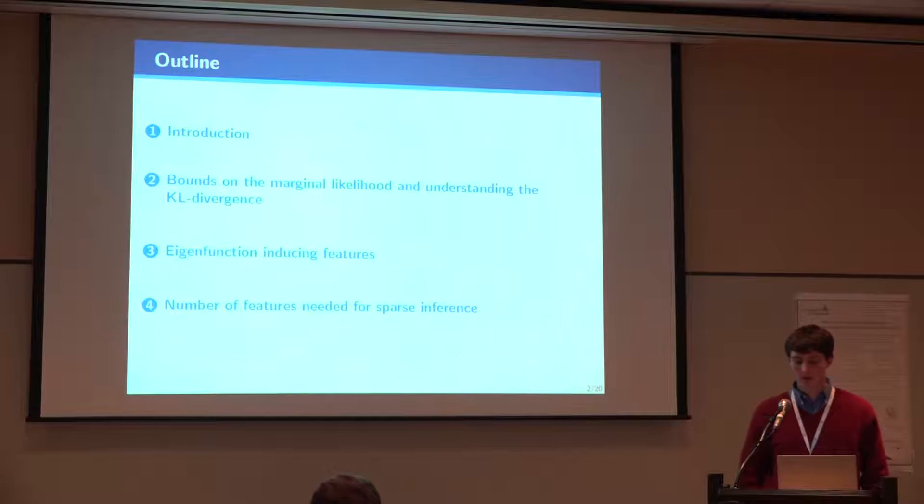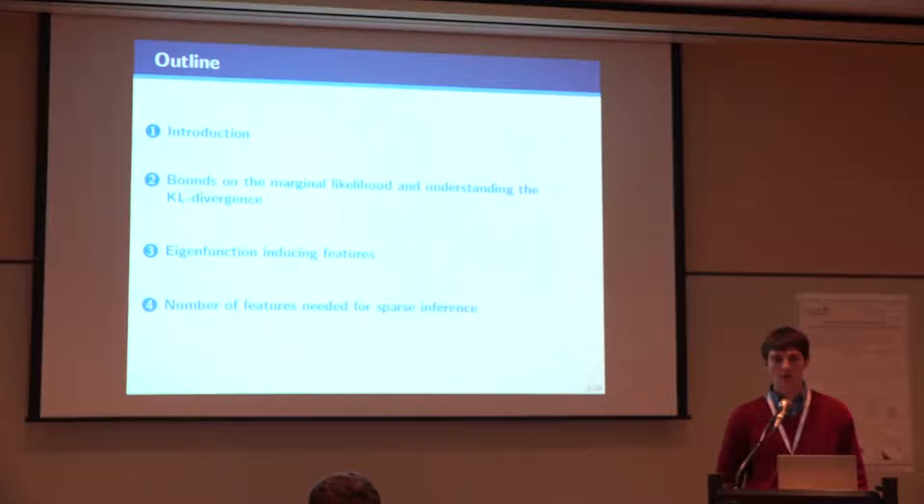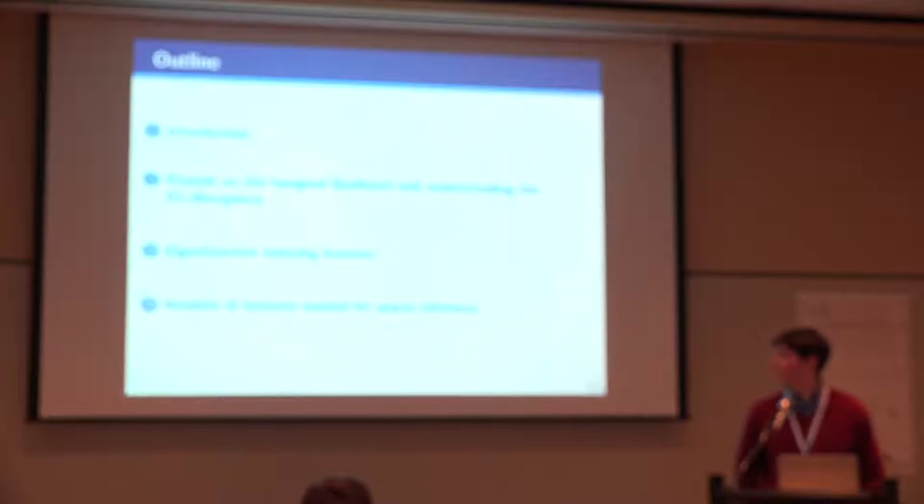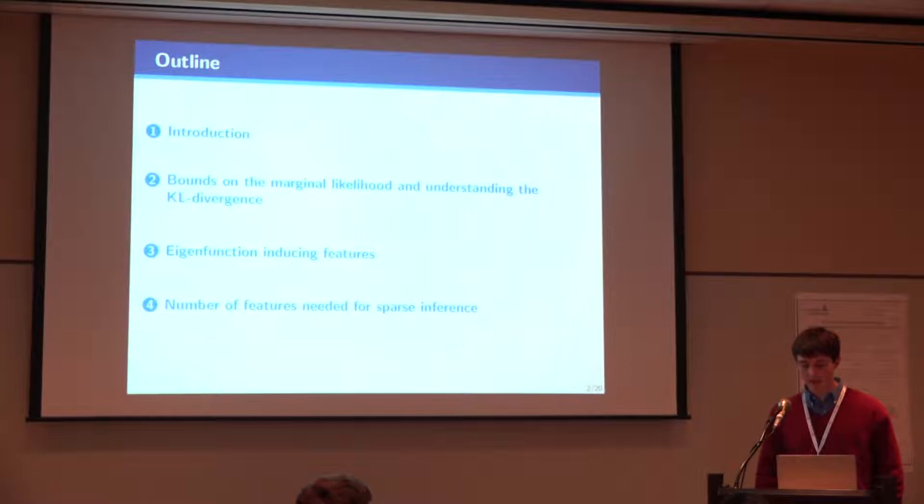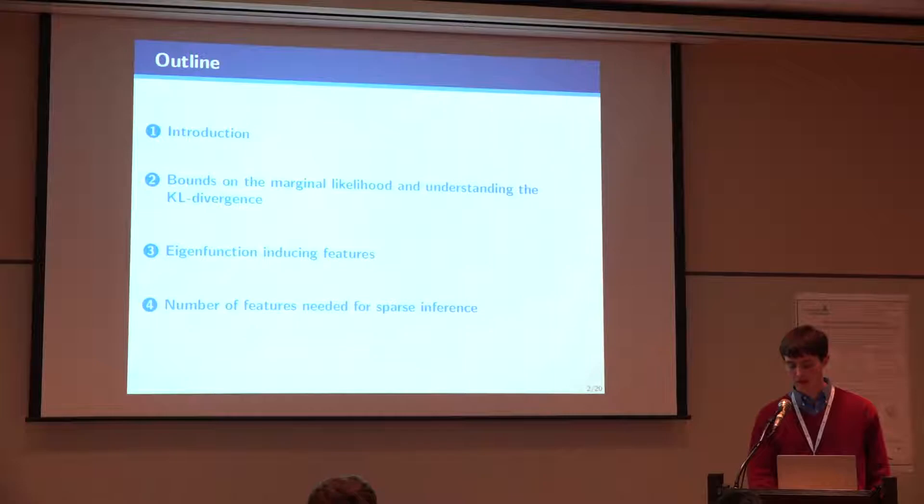I'll begin by briefly introducing the problem and then talk about some of the standard bounds on the marginal likelihood in understanding the KL divergence. Then I'll introduce eigenfunction inducing features which are an example of an inter-domain inducing feature and use these to derive the bounds that we prove on the KL divergence. And then get to what this means about how many features we actually need to use.